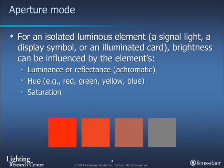Let's talk first about aperture mode. These are isolated luminous elements — think of them as points of light in an otherwise dark field, like traffic signals or landing lights. They're affected by the luminance or achromatic content, and also by hue — red, green, or blue — and saturation. At the bottom we see different levels of saturation with the same hue being red, from highly saturated to low saturated. Generally speaking, these are going to be seen as different in brightness at the same luminance.